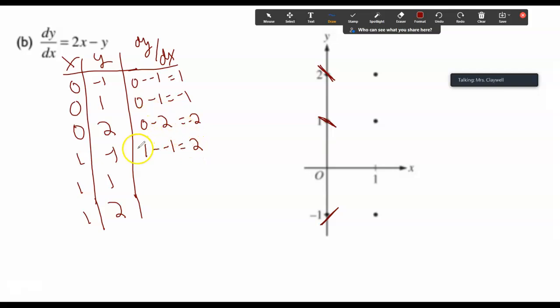Oh, this is 2 times 1. It should become a 3, so that's a steeper slope. 2 times 1 minus 1 is going to be a 1. 2 times 1 minus 2 is going to be a 0.